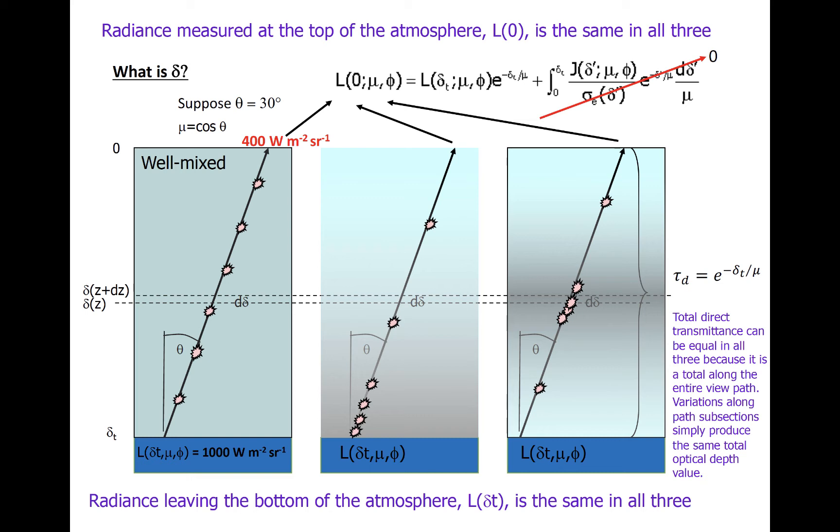Supposing they are, and that the radiance at the top of each atmosphere is 400 watts per square meter per steradian, what is the optical depth of the atmosphere? Pause here, taking a little time before advancing to see if you can figure out how to calculate the optical depth.